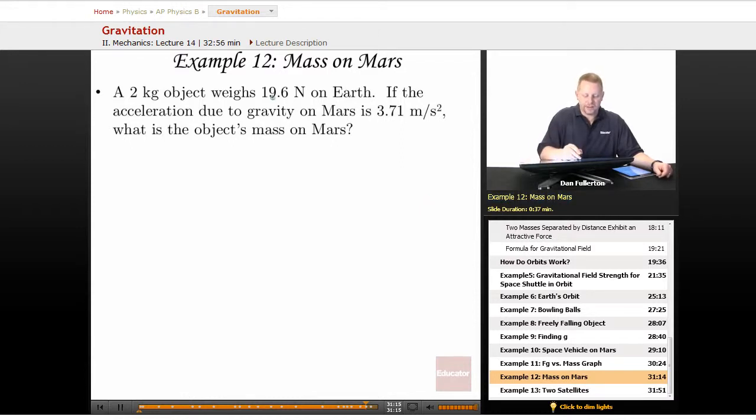Let's go back to Mars. A 2 kilogram object weighs 19.6 Newtons on Earth. If the acceleration due to gravity on Mars is 3.71 meters per second squared, what is the object's mass on Mars?